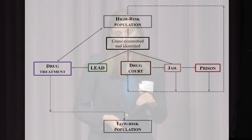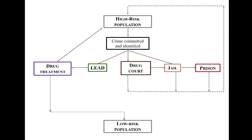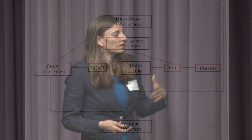Now let's say we add LEAD into the model. At the time a crime is committed, individuals can be diverted into this program and then into drug treatment, making them much more likely to get connected to those services. We would therefore expect a much greater flow into the low-risk population. To quantify that difference and the resulting difference in disease transmission, we need to instantiate the model.